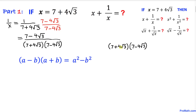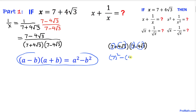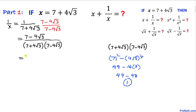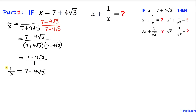The two denominator factors are a product of a sum and difference, so we use the formula (a+b)(a-b) = a² - b². Here a = 7 and b = 4√3, giving us 7² minus (4√3)², which is 49 minus 16 times 3, which is 49 minus 48 = 1. So 1 over x equals 7 minus 4 times square root of 3.